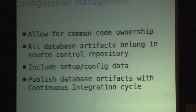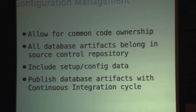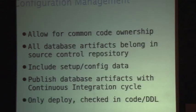At the end of the CI cycle, just like you create a jar or a war or a DLL or whatever you create, you should create something that goes on the database too — like a diff script or a deploy script that takes you from the previous version to the next version. Make sure you create that kind of artifact. And most importantly, only deploy what is checked in — don't just go to the production database and make a change.